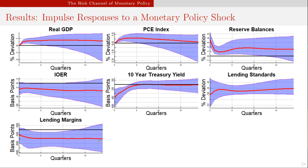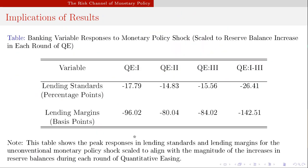Lending margins: on impact they drop 100 basis points and then further to about 150 basis points, where they remain — but the confidence band increases and crosses zero, meaning there's no significant response after a while. Banks lower lending standards, take more risk to prevent lending margins from falling, but lending margins fall anyway and fall significantly. So they take more risk to stabilize profit margins but aren't very successful at doing it.